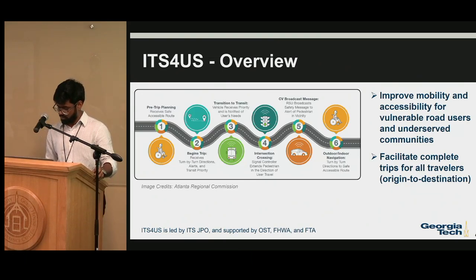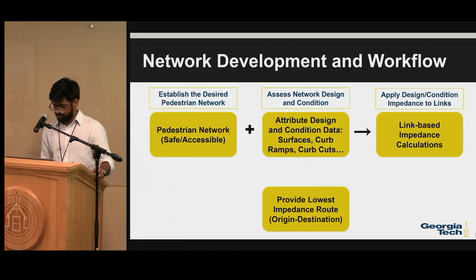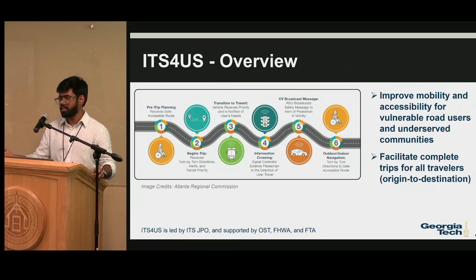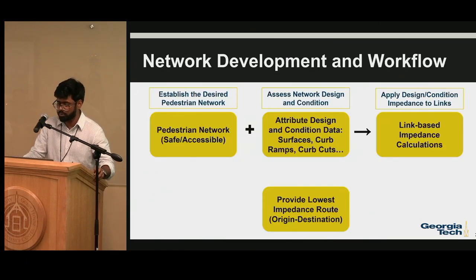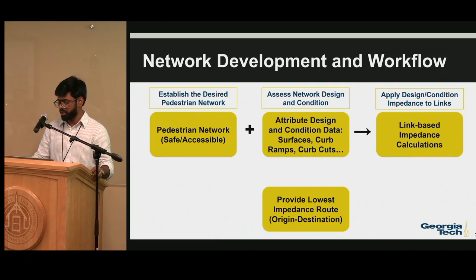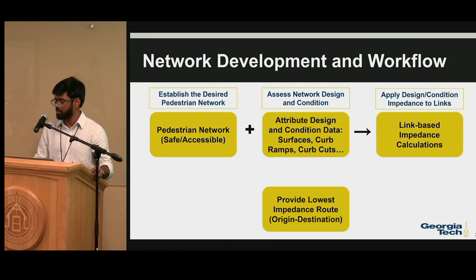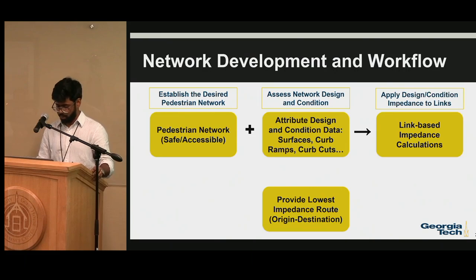This is very important for people with disabilities because Google Maps might tell you to take a certain route to reach a bus stop, but in reality that sidewalk could be deteriorated or have a missing patch. So we developed a network development workflow where you establish the network, assess its design and condition, assign assets and their conditions through a link-based impedance calculation, and then use the final network with impedance to provide routing solutions.